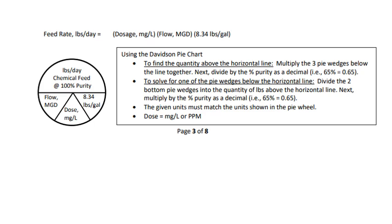Using the Davidson pie chart to solve the dosage question is actually pretty simple. You get the pie set up under different wedges. You'll take your given stuff out of your formulas — your knowns and your unknowns — which will be your pounds a day of feed, your flow in million gallons a day, or your dosage. 8.34 is a constant.